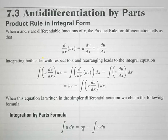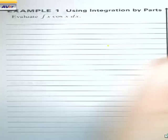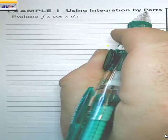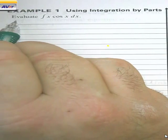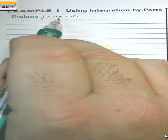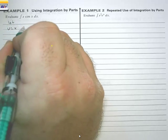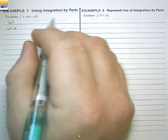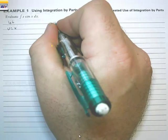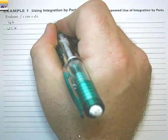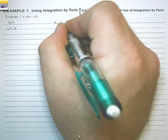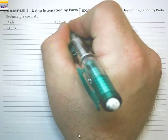So that's what we have to know: uv minus the integral of v du. Example 1: using integration by parts. Evaluate the integral of x·cos(x) dx. We're going to pick the function where, if we took the derivative enough times, we would end up with 0. For example, the derivative of x is 1, and the derivative of 1 is 0.